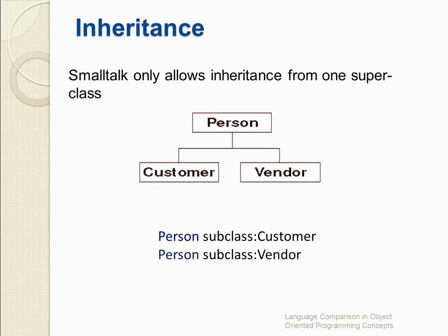As I mentioned before, inheritance allows the user to extend the existing program to do required functions. The diagram mentioned in this slide is an example of inheritance. First we created a class called Person, and there are two other classes: the Customer class and the Vendor class. These classes are subclasses of the Person class, so the Customer and Vendor classes inherit the behavior of the Person class.